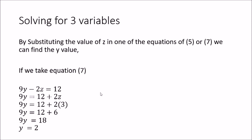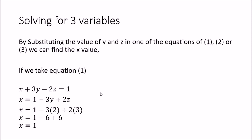With z and y known, we substitute both into one of the original equations. Taking equation 1: x + 3y - 2z = 1, we get x = 1 - 3(2) + 2(3), and the terms simplify so that x = 1. In this manner we can solve three simultaneous equations in three variables, finding all three unknowns step by step.